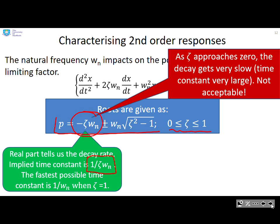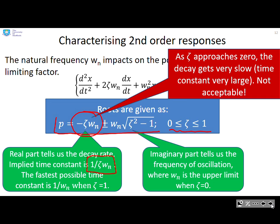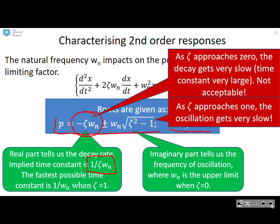As ζ approaches 0, the decay gets very slow, the time constant gets very large, and that's not acceptable. Let's look at the imaginary part then, which tells us the frequency of oscillation. ωₙ is now the upper limit because if ζ equals 0 then essentially you get ωₙ times 1, the largest frequency you can get. But as ζ approaches 1, the square root of ζ² - 1 gets to be a smaller and smaller number and so your frequency gets slower and slower. So as ζ approaches 1, the oscillation gets very slow.